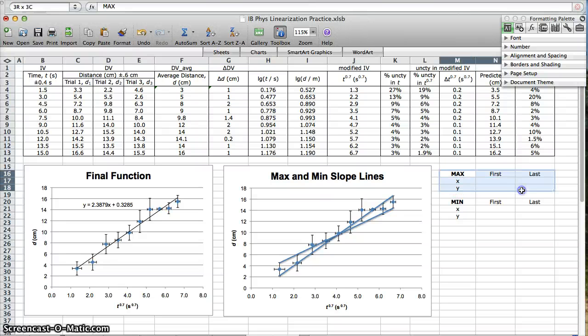Now what we need to do is tell Excel what to graph. The max slope line, we have to plug in the data, the coordinates of the first and last points. So what's the x value of our first data point? You look at your x-axis to find the answer. You look at your x-axis, time to the 0.7. So find the column with time to the 0.7. Here it is. The first x value is simply the first number in that column.